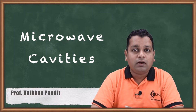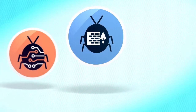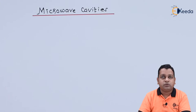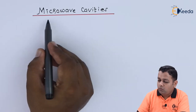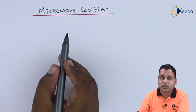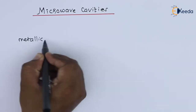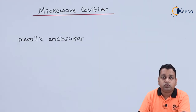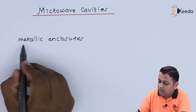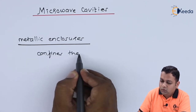So now, what are Microwave Cavities? Let us first get introduced to this topic. Microwave Cavities are basically Metallic Enclosures. The use of these Metallic Enclosures is that they confine Electromagnetic Energy.